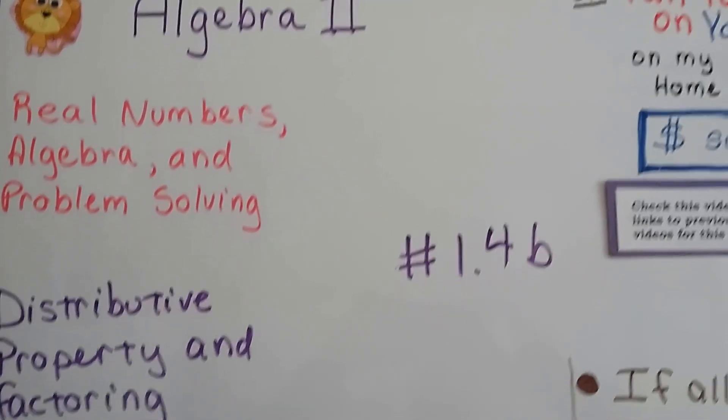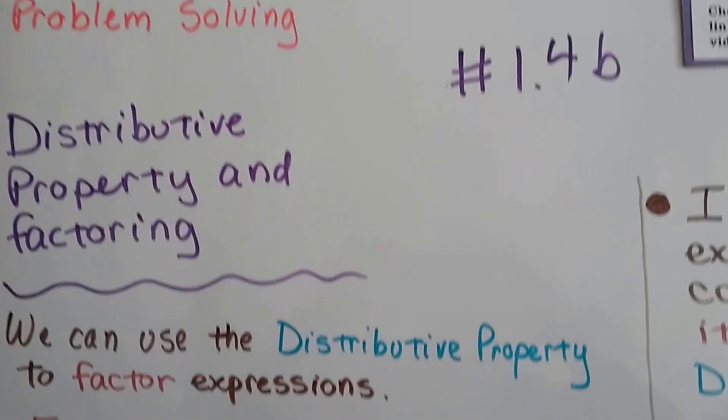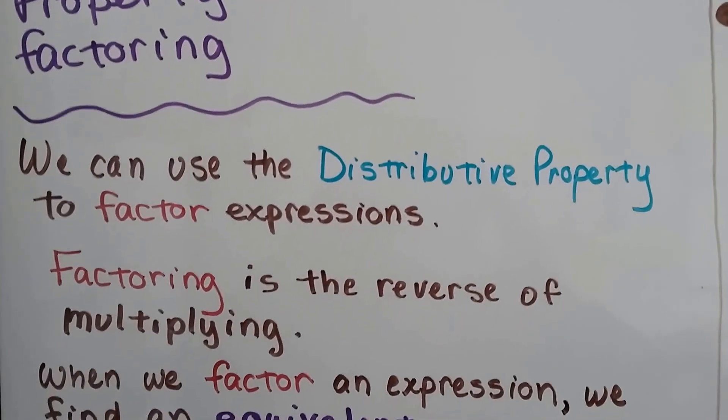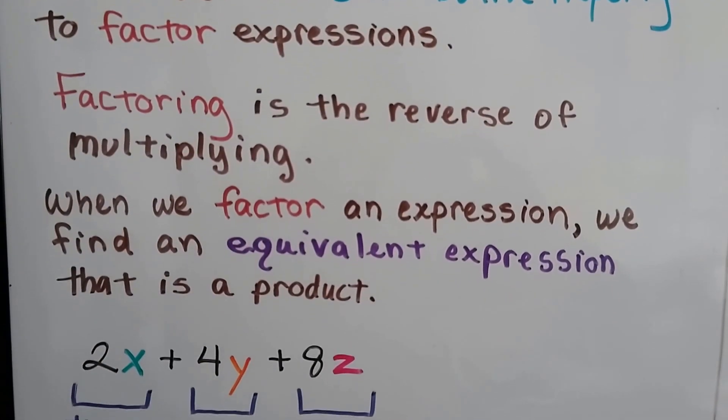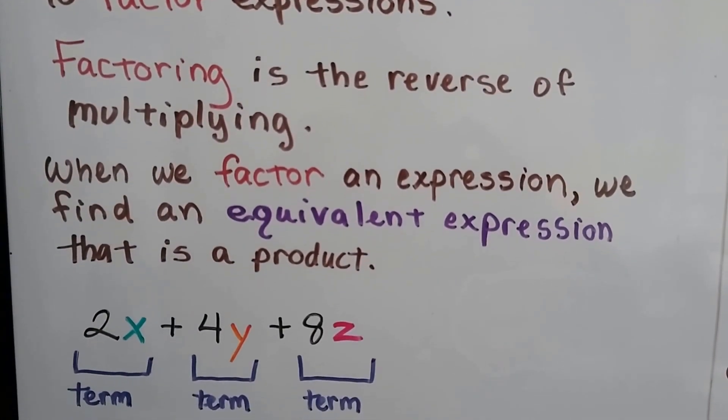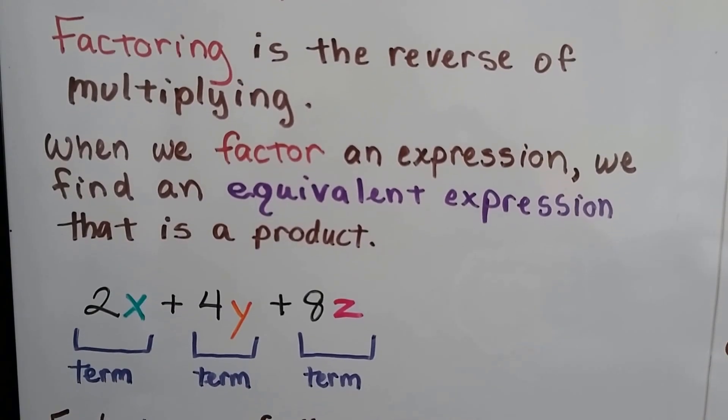Algebra 2, 1.4b, the distributive property and factoring. We can use the distributive property to factor expressions, and factoring is the reverse of multiplying. When we factor an expression, we find an equivalent expression that's a product.